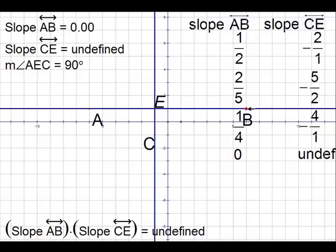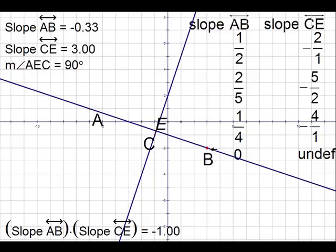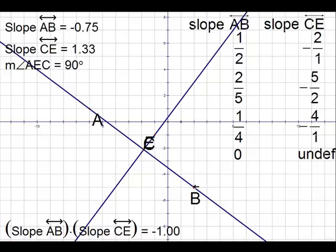Now I want to move point B to the location (2, -5). Notice as I move point B, the Sketchpad continues to update the slopes. Now the slope of line AB, negative 0.75, we know that as a fraction is negative 3/4.